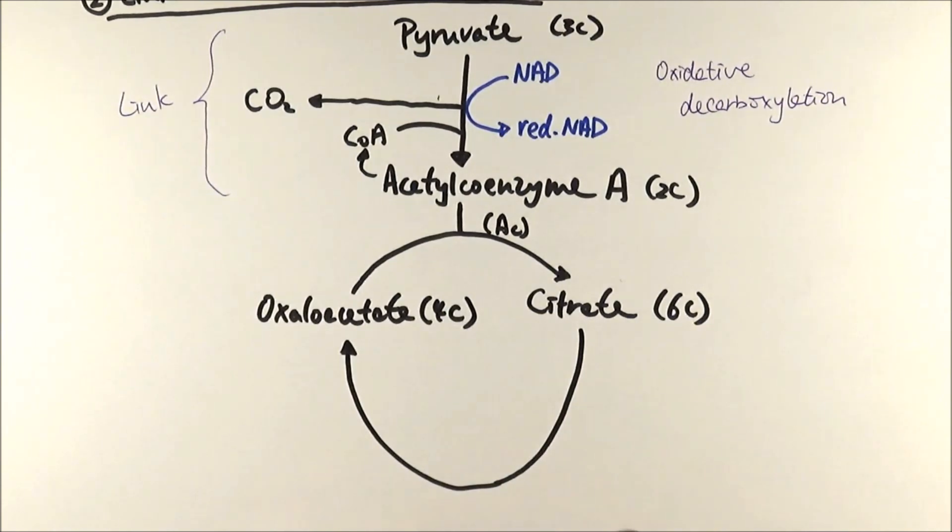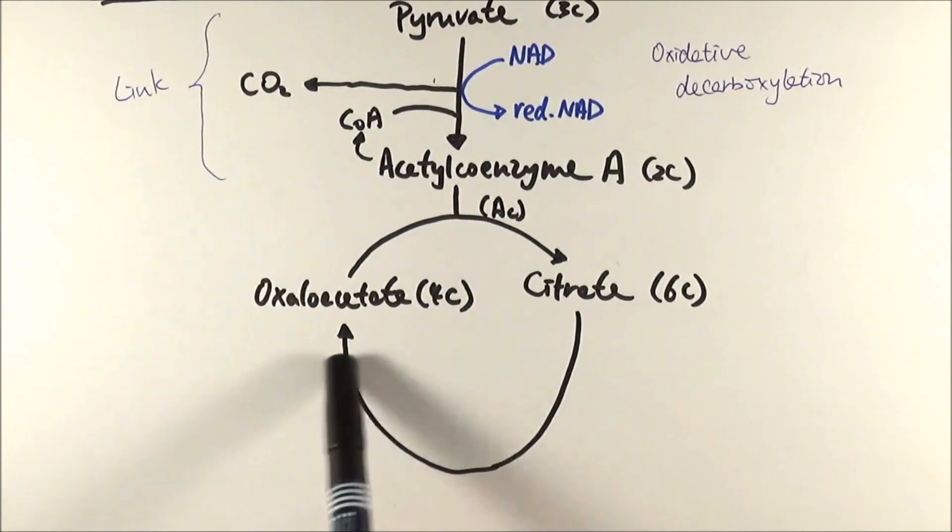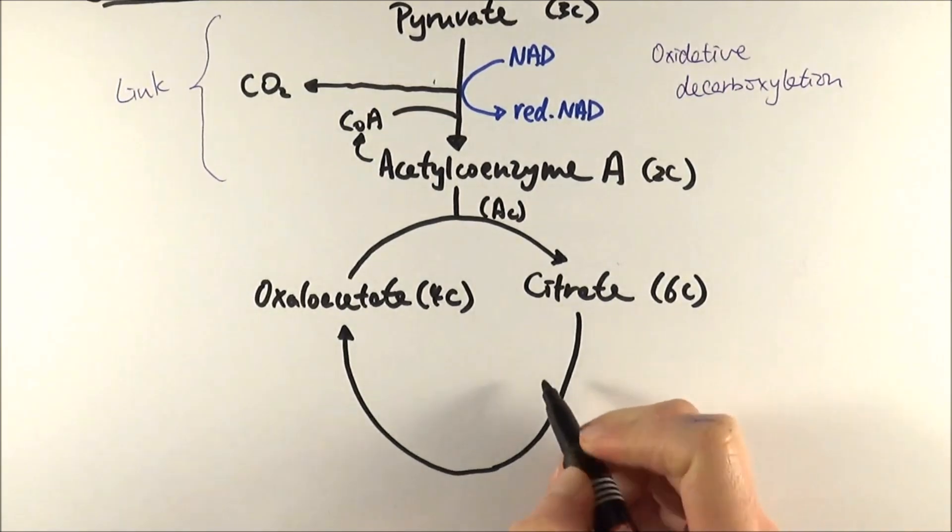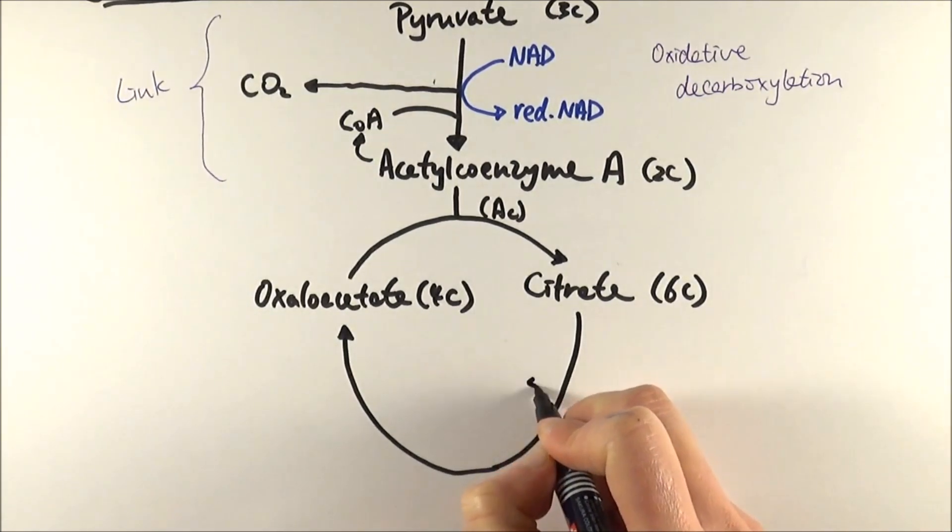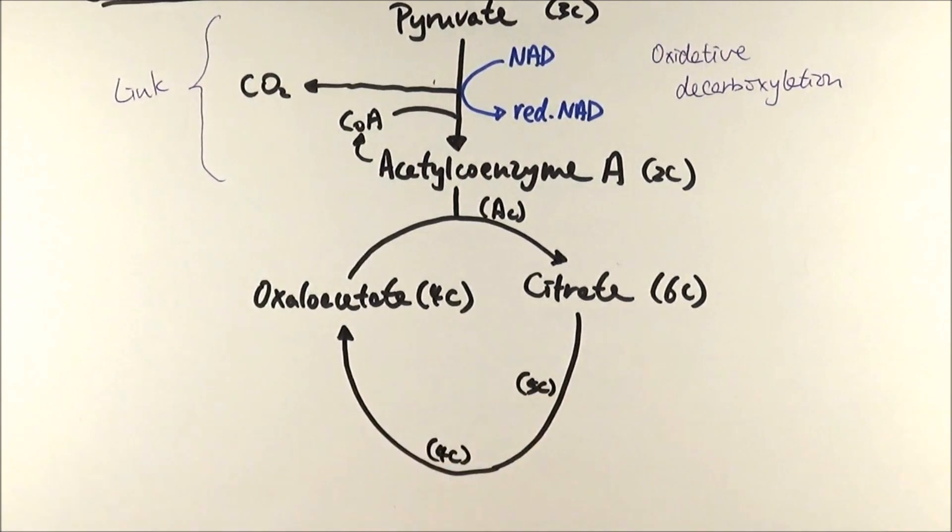It goes on and binds with another acetyl group to regenerate it again. The whole point of this process is that we can generate lots of products in the middle which will be sent off in the final stage, which is the oxidative phosphorylation. From citrate, which is a six carbon molecule, it goes off to make a five carbon molecule here, then a four carbon molecule here, and then it goes on with different stages.